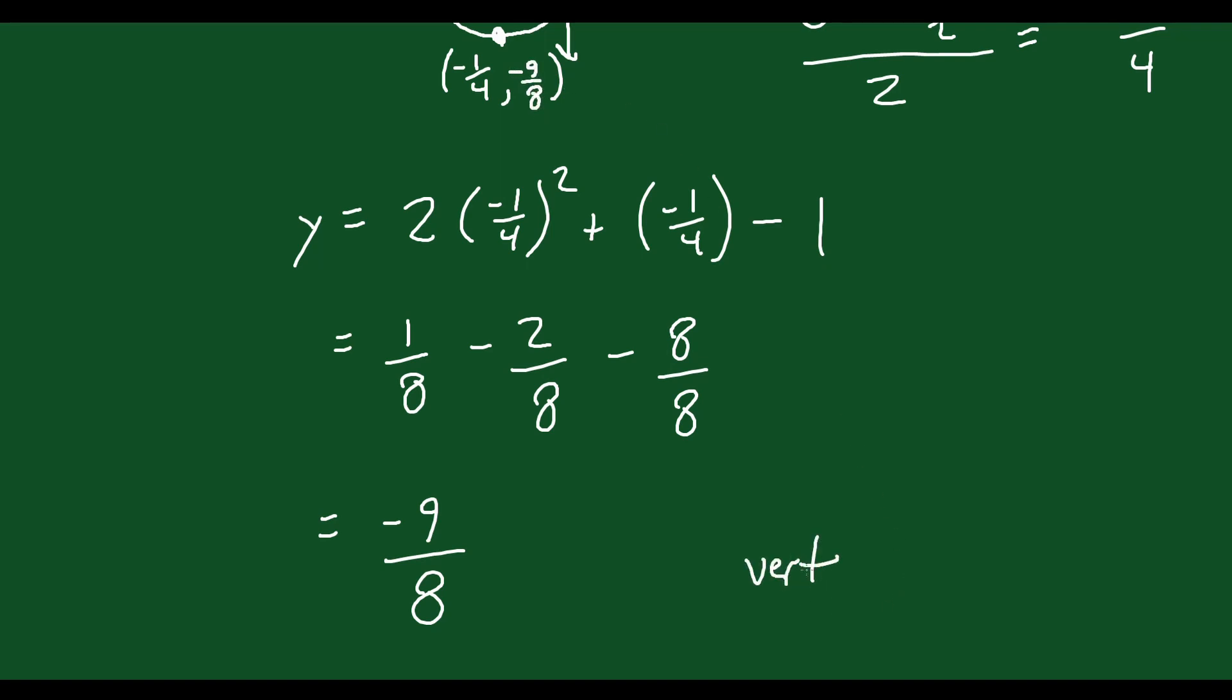So your vertex, you could say, is located at negative 1 quarter, negative 9 over 8. That's the point where your vertex is located.